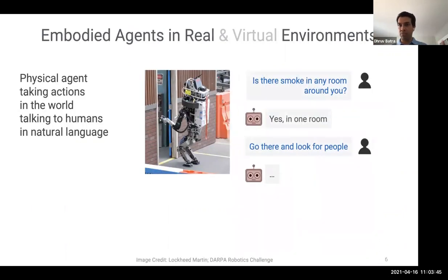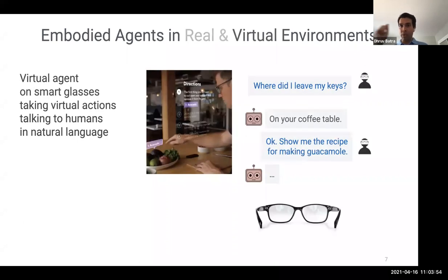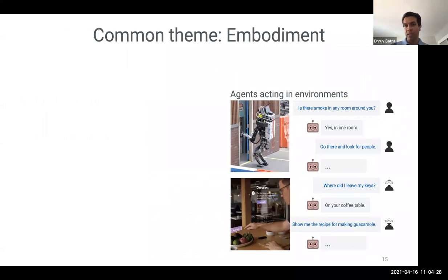These agents may be physical, in which case this is the entire field of robotics. Physical agents taking physical actions in the world, talking to humans in natural language, or these agents may be virtual. So imagine you are wearing, in not so distant future, smart glasses that have AR capabilities, where an agent can perceive what you are perceiving. The common theme here is, of course, embodiment.